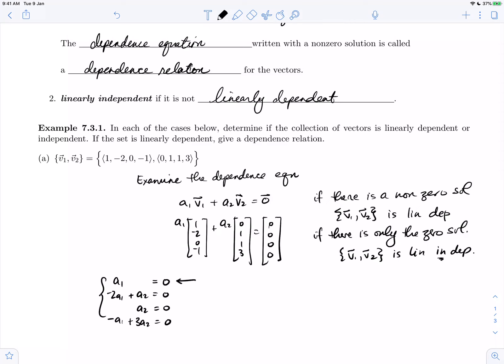We see right away that a1 and a2 have to be 0. Since this is a homogeneous system, that zero solution will work in the other equations. Homogeneous systems are never inconsistent, they're always consistent. So there is only the zero solution.